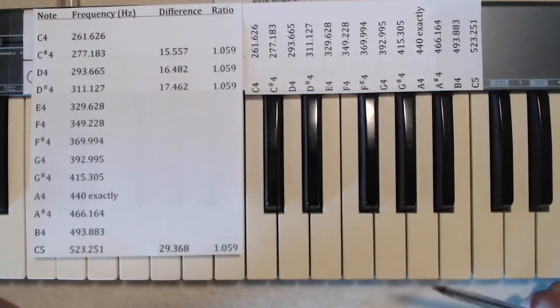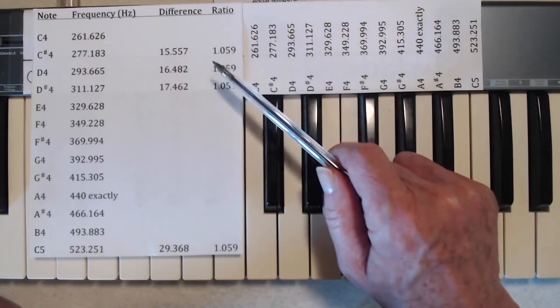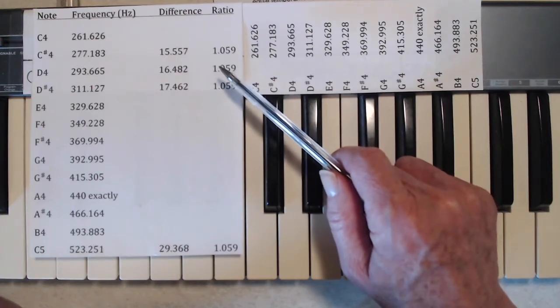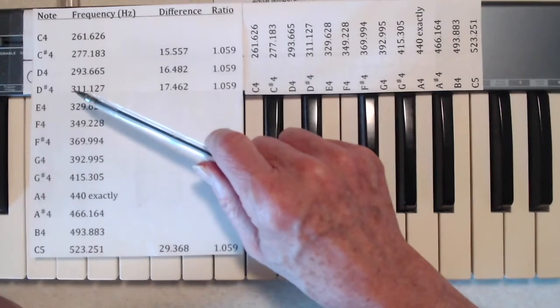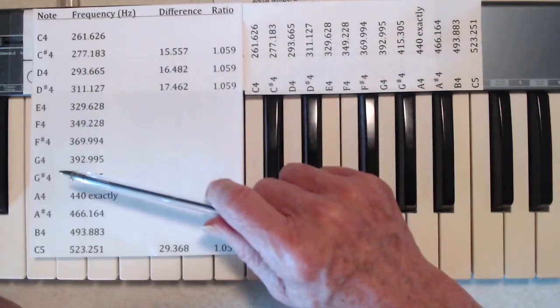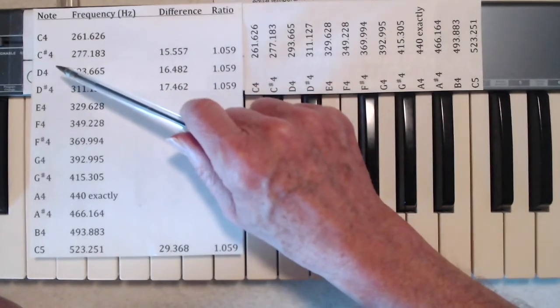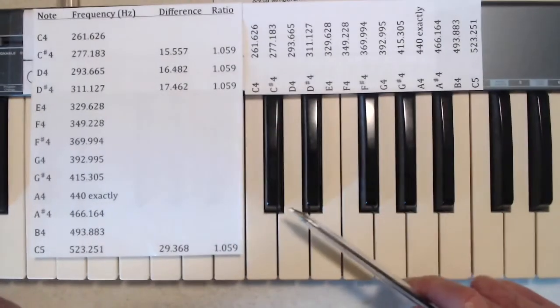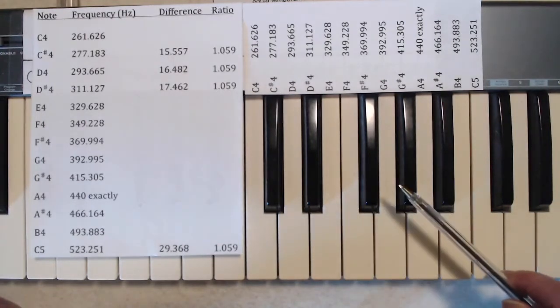Now, a ratio of 1.059 means an increase of 5.9% in frequency in going from one note to the next. And that's going to be consistent throughout the whole spectrum of notes. Each time we move from one note to the next, we go up in frequency by 5.9% each time.